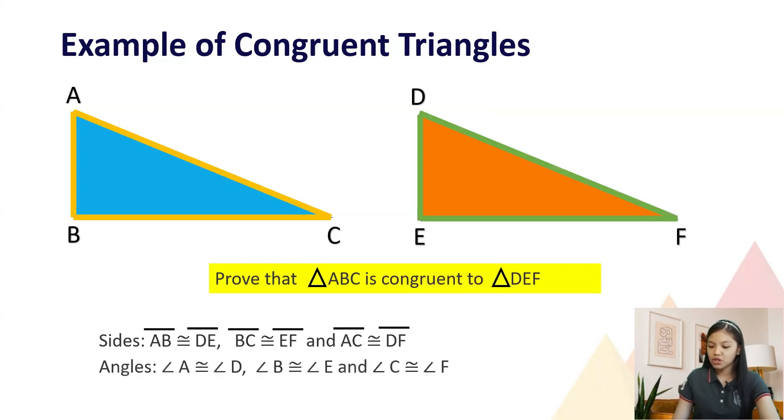Their corresponding angles are also congruent. Angle A is congruent to angle D, angle B is congruent to angle E, and angle C is congruent to angle F. Therefore, triangle ABC is congruent to triangle DEF.